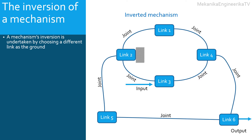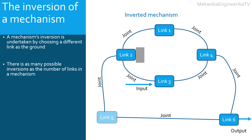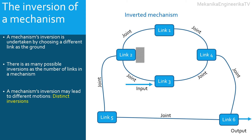In this inversion, link 2 is the reference for the other links. Any link can be a candidate to be a ground. There is no condition on links to be a ground or a reference. Thus, there are as many inversions as the number of links the mechanism has. The choice of the link to be the ground will depend on the type of motion required from the mechanism. The mechanism's inversion can have different motions from the original mechanism. Some inversions may have similar motions as the original mechanism. If the inversion gives different motions, it is called a distinct inversion. If a mechanism has L links, then it has L inversions, but the number of distinct inversions is lower or equal to L.